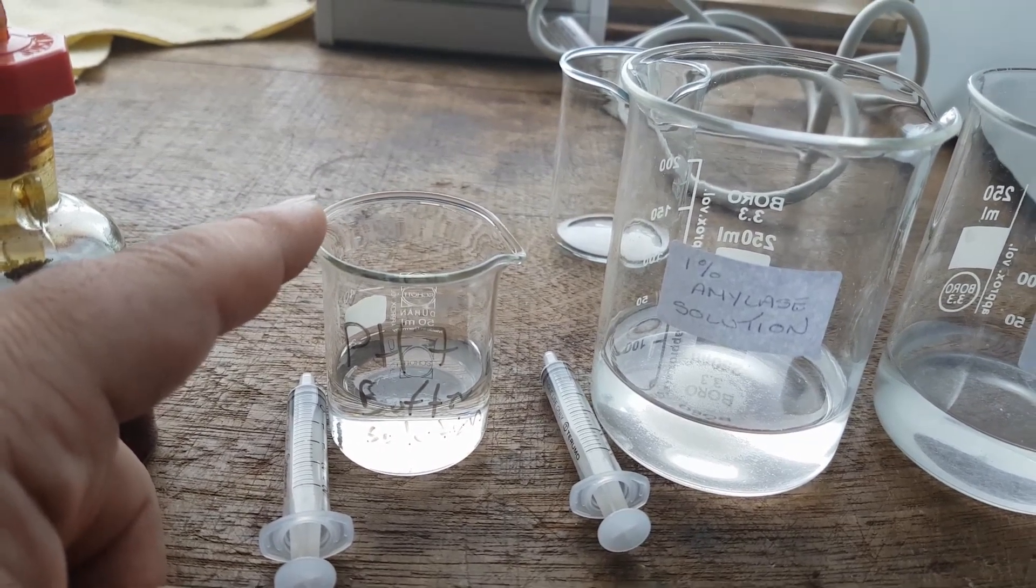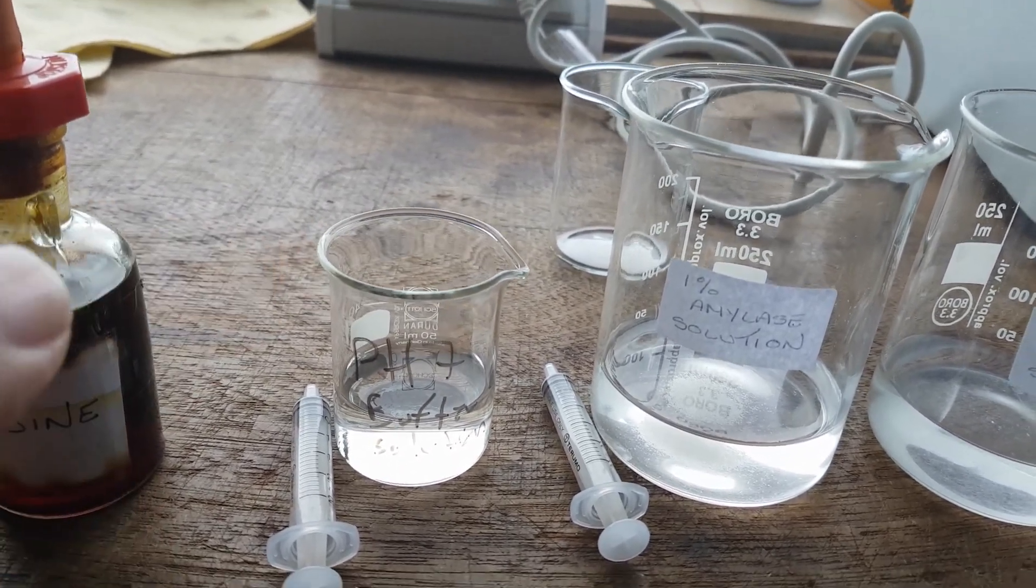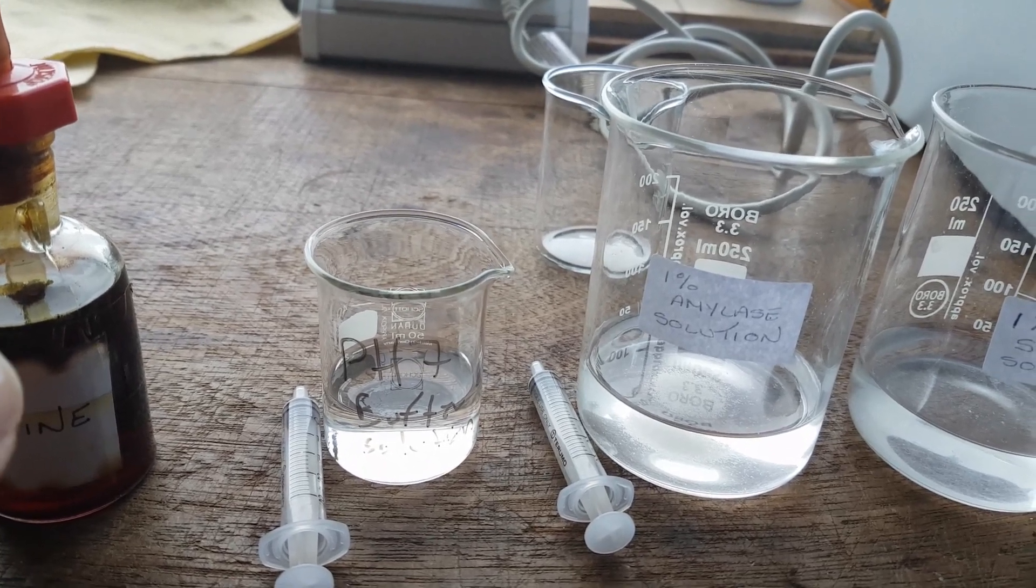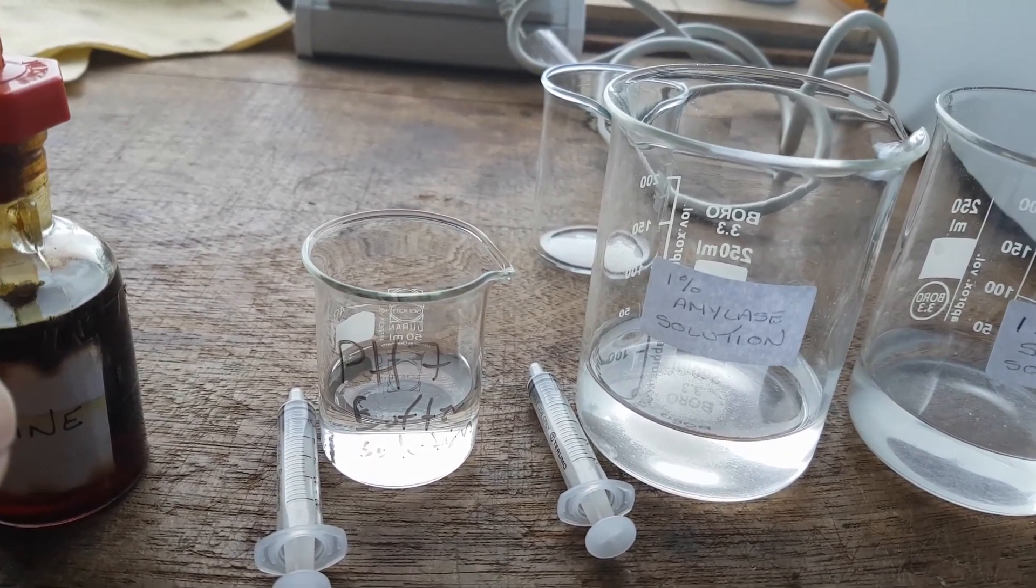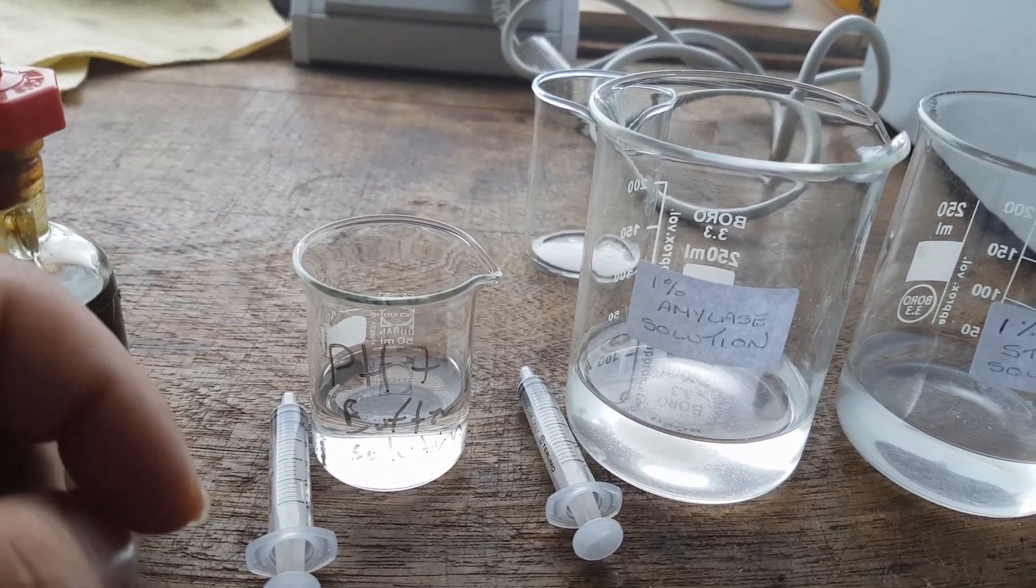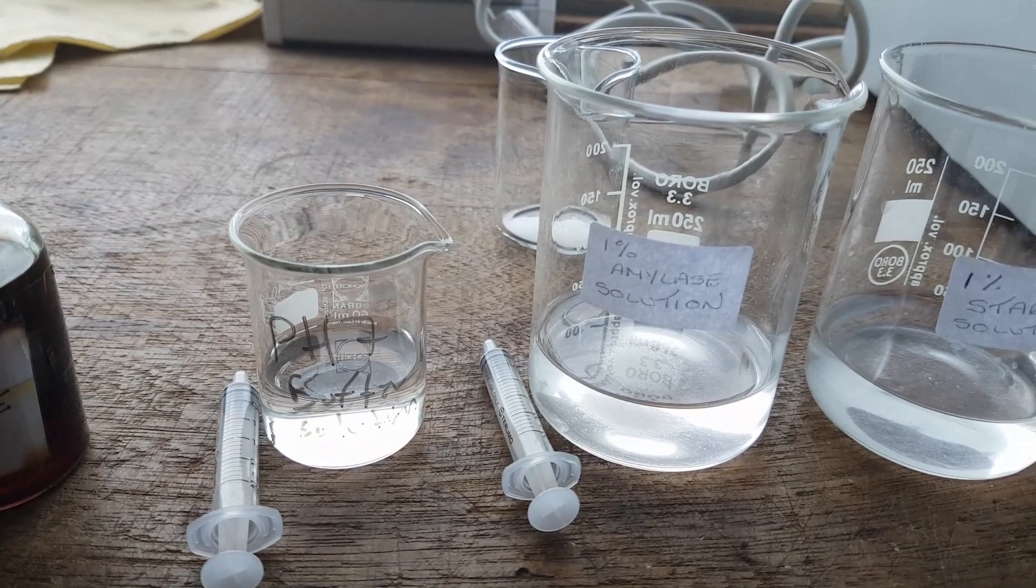so we're going to have different pH buffers. This one happens to be pH 7. A pH buffer is basically a solution which does not change pH readily. So in other words, this will stay close to pH 7 as much as it possibly can. So that's what a buffer solution is.